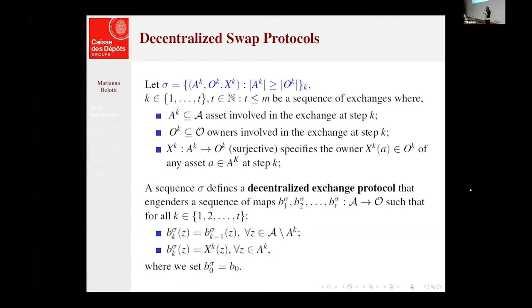And of course, what we have is that at a certain step, we have a transfer of an object or multiple objects, but the others stay stateless. So at this time k, if the asset is not involved, we stay with the configuration we had in k minus one.